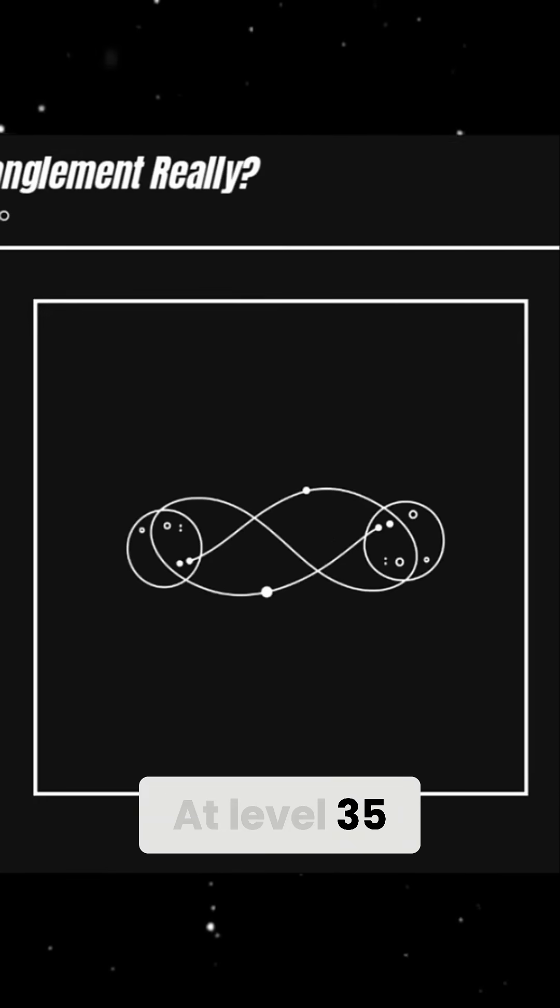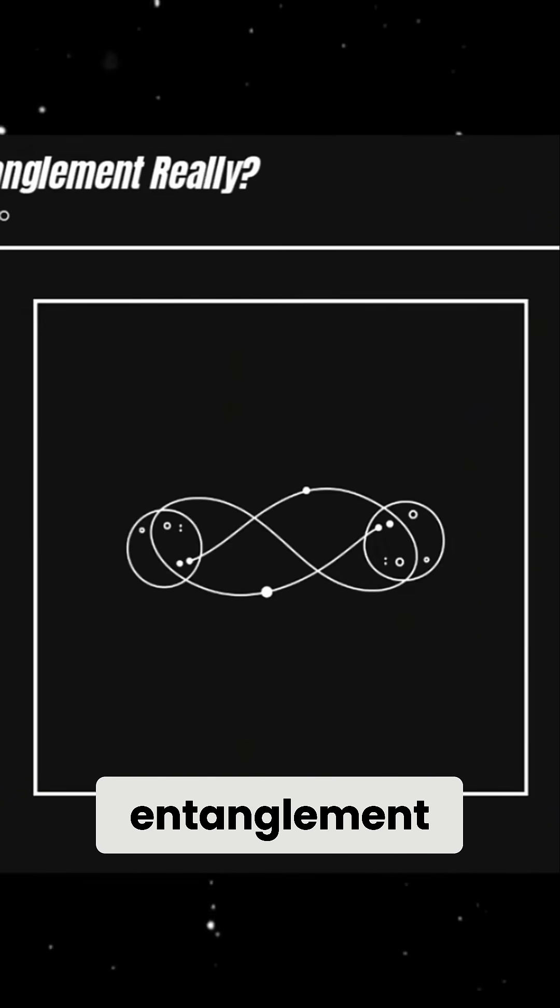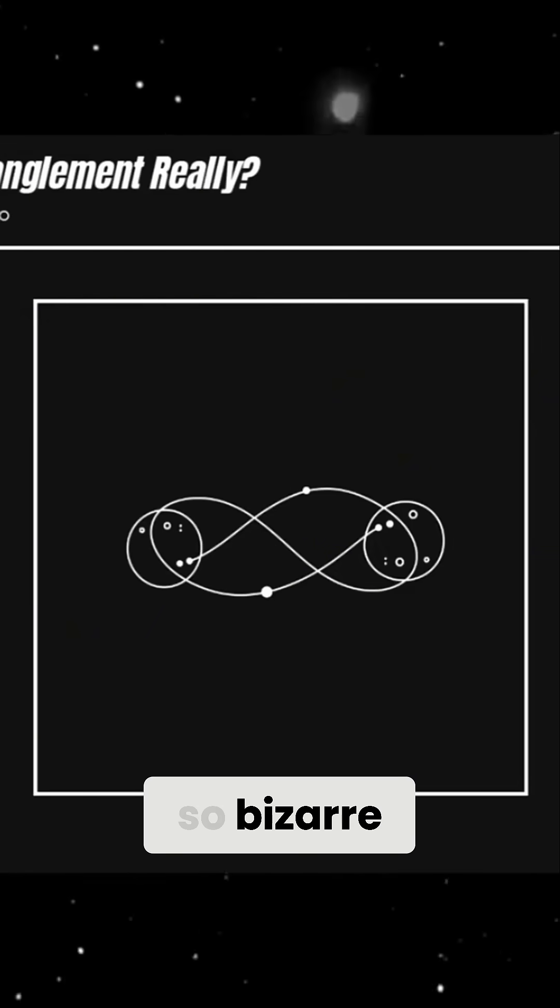At level 35, one of the strangest and most mind-bending mysteries in physics is quantum entanglement, a phenomenon so bizarre that even Einstein famously called it spooky action at a distance.